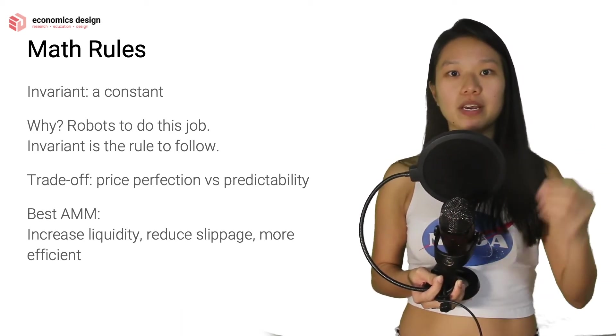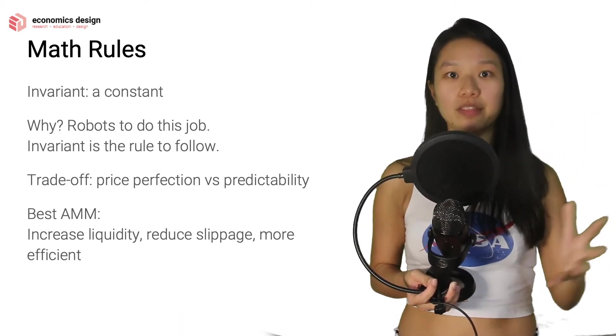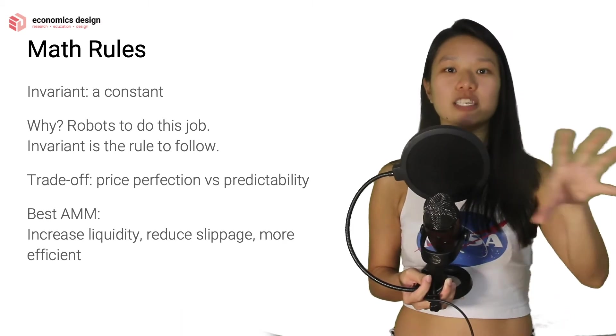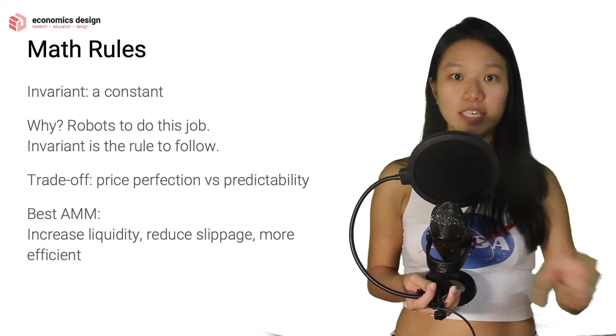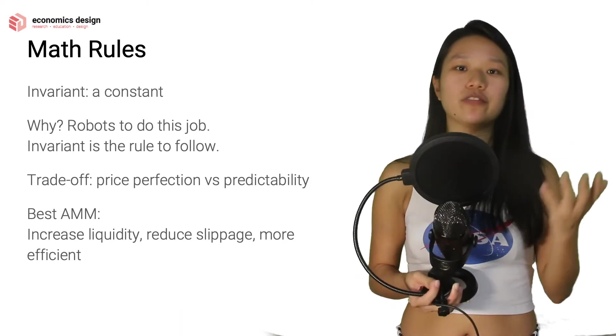But we have predictability because we can predict, knowing the shape of the curve, knowing the math that's involved, we can predict that this is the expected value that we can receive or this is the expected state that the ecosystem or the AMM will be. So that's a little trade-off that we have to accept.